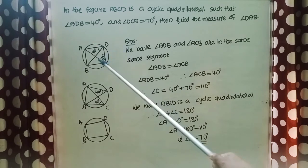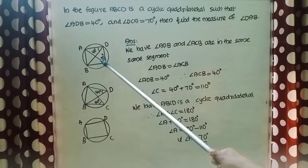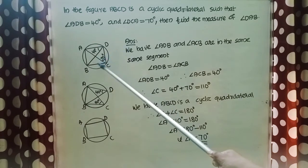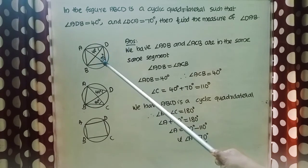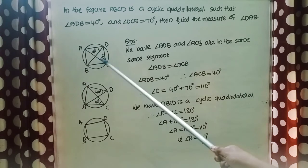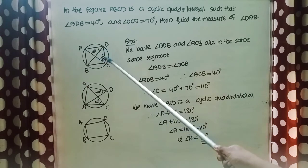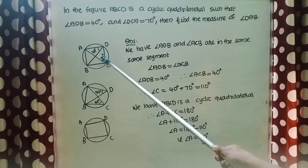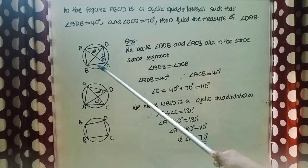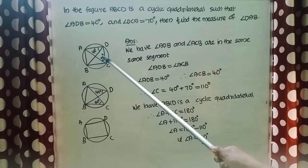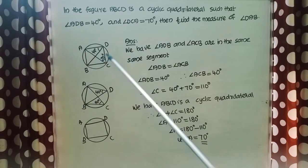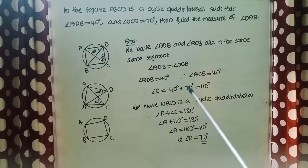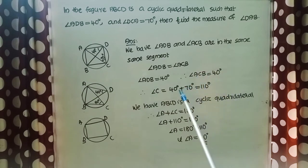Angle ACB is part of angle C. So angle C is the sum of angle ACB and angle DCA, giving angle C equal to 40 degrees plus 70 degrees, that is 110 degrees.